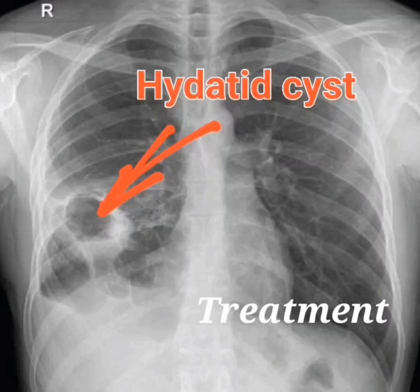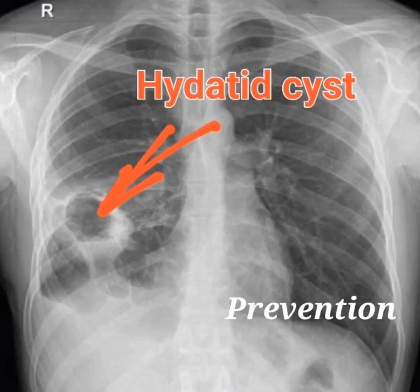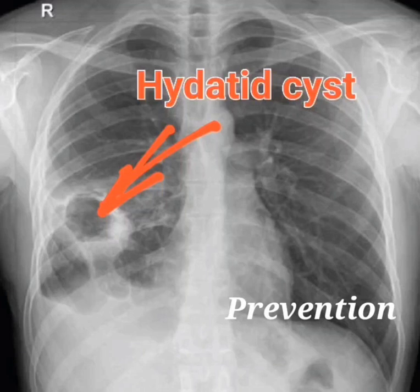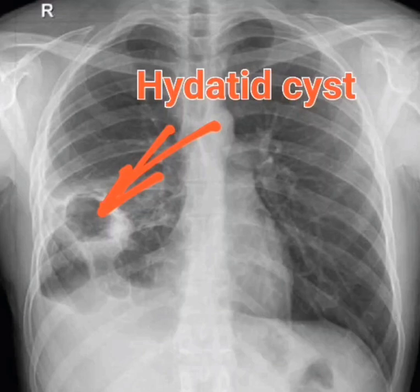Here are some tips to help prevent hydatid cyst of the lung: avoid contact with contaminated soil or water, cook meat thoroughly before eating it, do not feed your dog raw meat or bones, and deworm your dog regularly. If you think you may have a hydatid cyst of the lung, see your doctor right away. Early diagnosis and treatment is important for a good outcome.